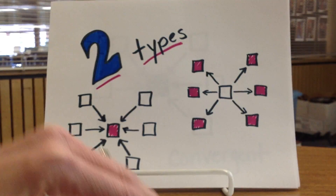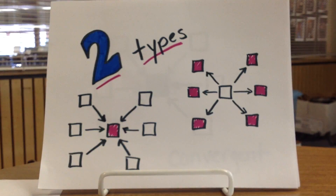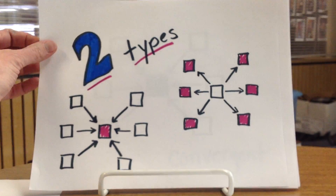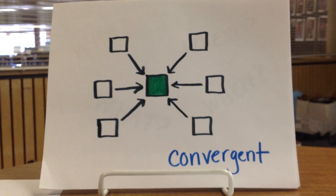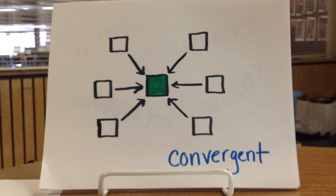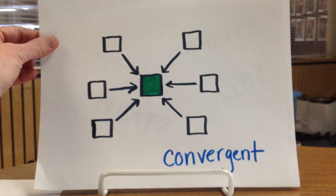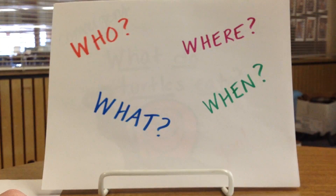When we think about focus questions, there are two main types to consider: convergent and divergent. Convergent questions are the kind of questions that get you to that one answer. You find the answer and you're done — everything brings us to this precise point. In terms of level of thinking, this is a much more basic comprehension level thinking. These closed-ended questions often begin with who, what, where, or when.